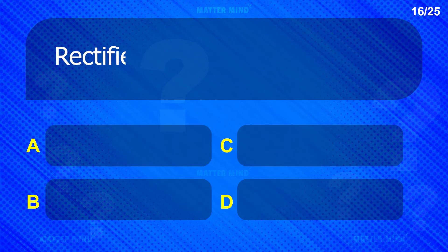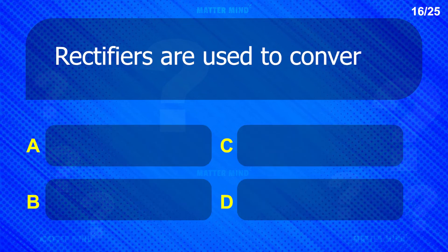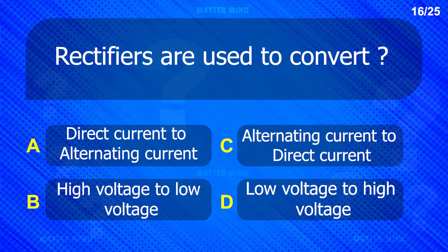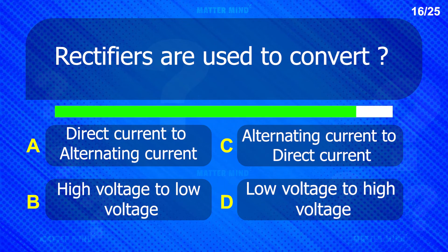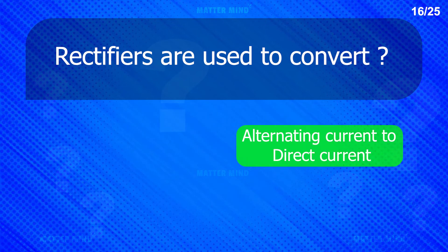Rectifiers are used to convert alternating current to direct current.